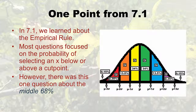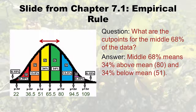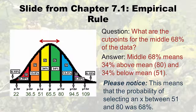Remember the empirical rule from 7.1. There was a question about the middle 68% — what are the cut points for the middle 68% of the data? That meant 34% on one side of mu and 34% on the other. The lower limit was 51 and the upper limit was 80. So the probability of selecting an x between 51 and 80 was 68%. Another way of saying this: I am 68% confident it'll be between 51 and 80.